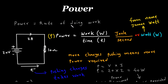Now power is the rate of doing work. So here, to push this electron — remember that conventional current flows from the positive terminal of battery to the negative terminal of battery, and electrons flow from the negative terminal of battery to the positive terminal of battery. Now to push these electrons, pushing charges takes work. More charges pushing means more power required.